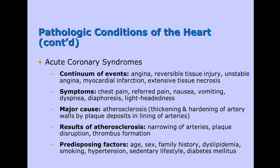When we see someone with an acute coronary issue, we usually have some type of syndromes that take place. The continuum of events includes angina, or chest pain, with possible reversible tissue injury depending on how early it's caught. Unstable angina is chest pain that comes and goes. We can have an actual heart attack — a myocardial infarction — or we can find extensive tissue necrosis depending on how far along or how severe the event could be.